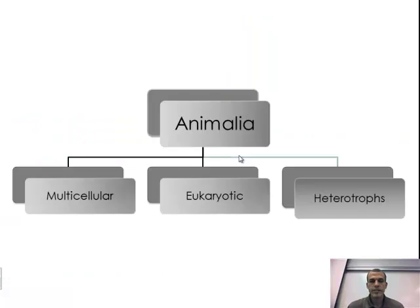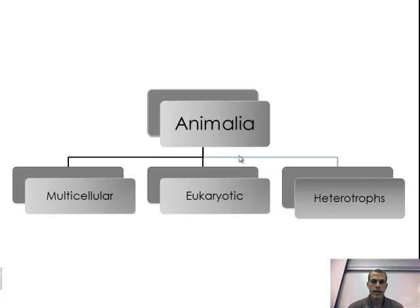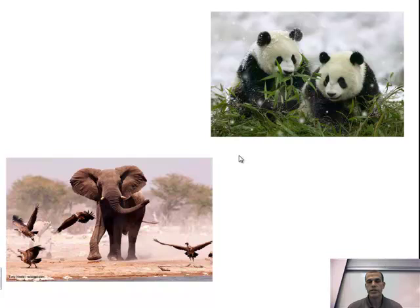The last kingdom is Animalia. These are multicellular, eukaryotic, and what we call heterotrophs — heterotrophs means they cannot produce their own food, so they have to consume it. By drinking or eating something, that's how we as humans and other animals get our nutrients: we have to consume other particular types of organisms in order to get the nutrients we need.